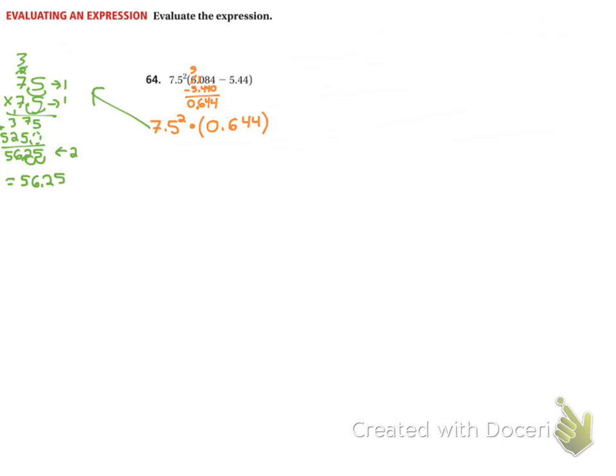Which this is close to, let's say, 7 times 8, which is 56. Because we have a half on one and a half on the other. So that does seem like a reasonable answer for multiplying those two.